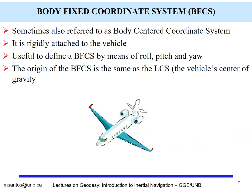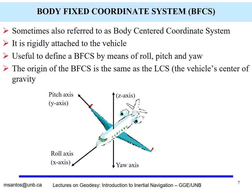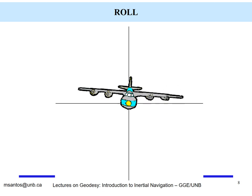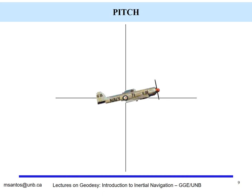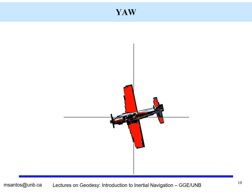Consider this aircraft as an example of the body-fixed coordinate system. We have the x-axis, which we call the roll-axis. The pitch-axis points towards the right-hand side — that is the y-axis. The z-axis points up, forming our right-handed Cartesian system, and is known as the yaw-axis. A rotation around the x-axis is called roll, a rotation around the y-axis is the pitch, and yaw is the azimuthal variation.